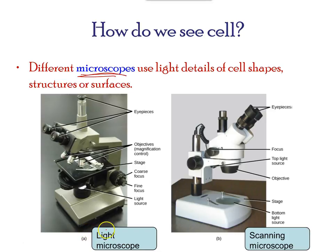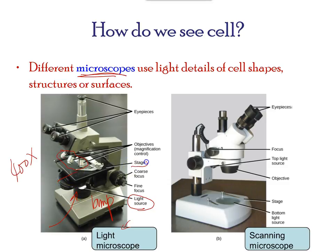Light microscopes, commonly used in undergraduate college laboratories, magnify up to approximately 400 times. The parameters used are magnification, controlled by the objectives, and resolving power, which is the ability to achieve clarity — similar to that used in cameras. Light enters through the specimen, which is placed on the stage, and the eyepiece is used to observe the specimen.